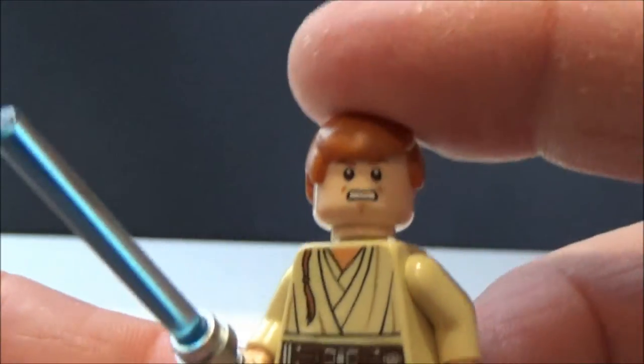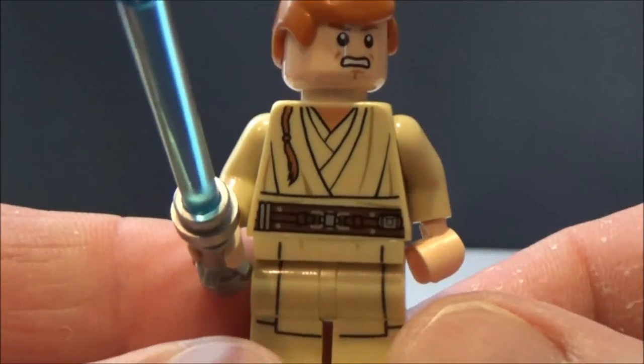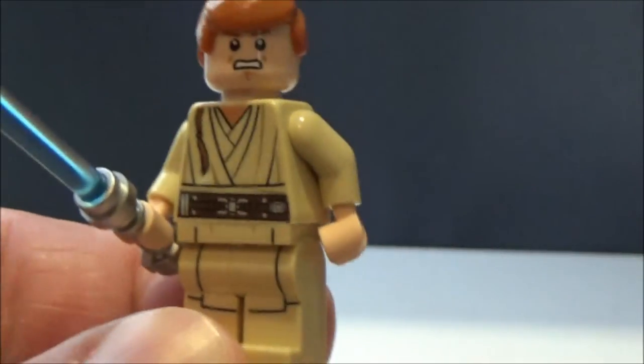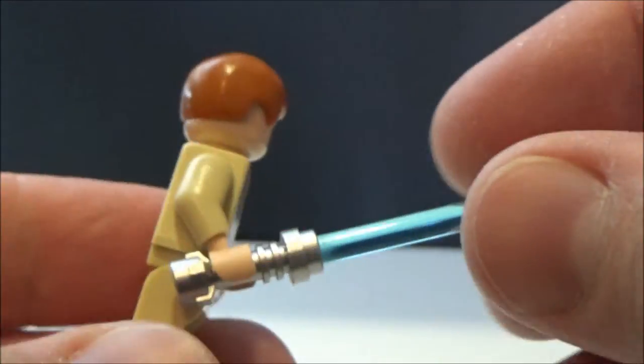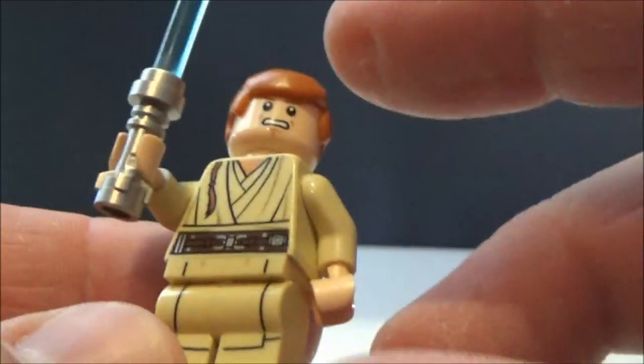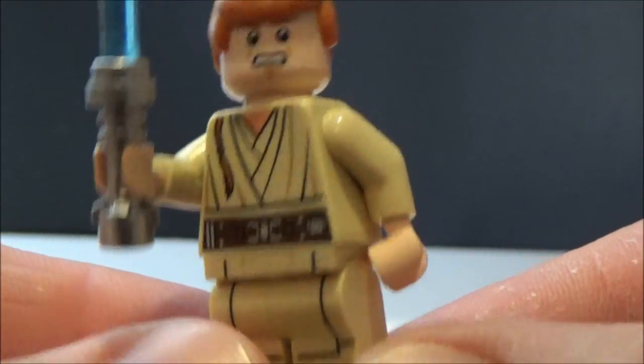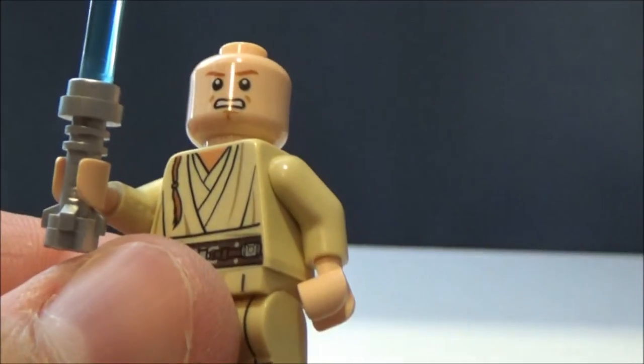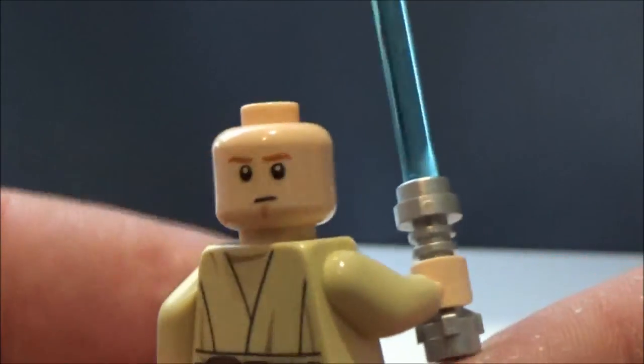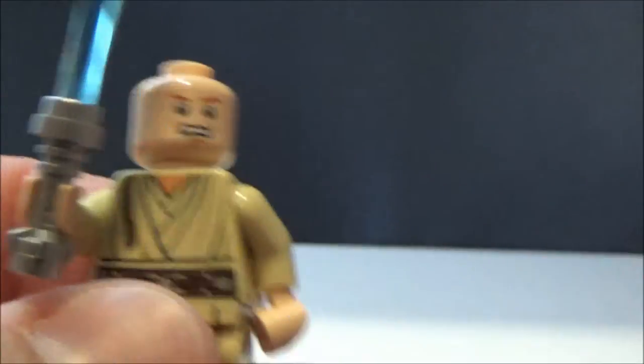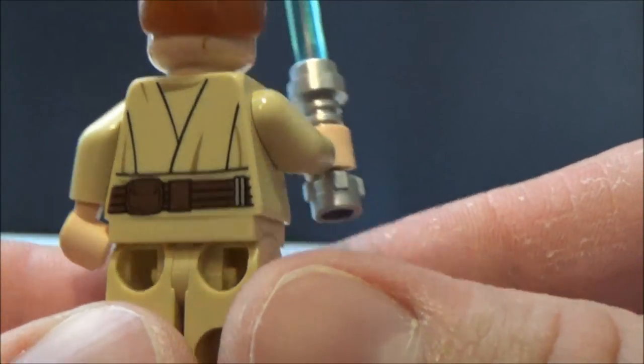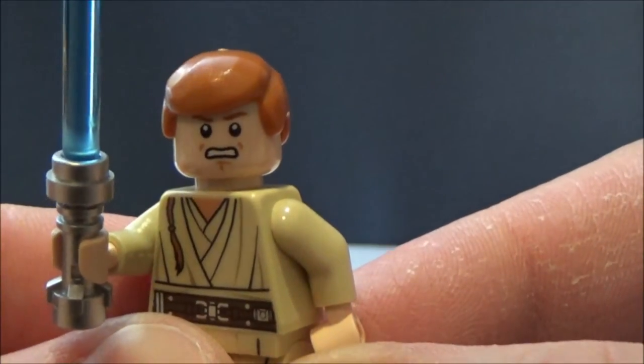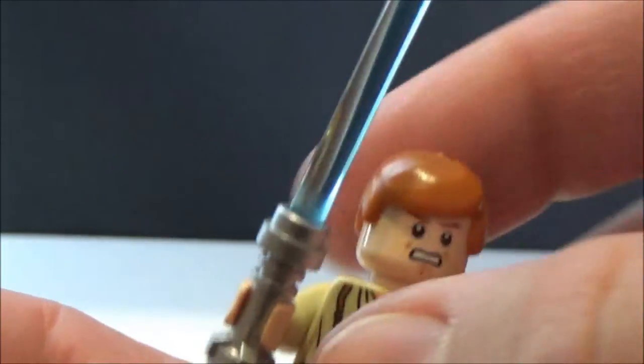Next we've got Obi-Wan Kenobi. This is another great minifigure, I was really happy to get this one. Look at the Jedi robe, I love that little padawan braid that they added in, I think that's really cool. He's got the blue lightsaber, nice printing of the Jedi robes, the belt is nice. He's got a double printed face, so he's got his angry face and his stern looking face, which is pretty good. Yeah, printing with some buckles and stuff on the back. Obi-Wan Kenobi is a good minifigure too.